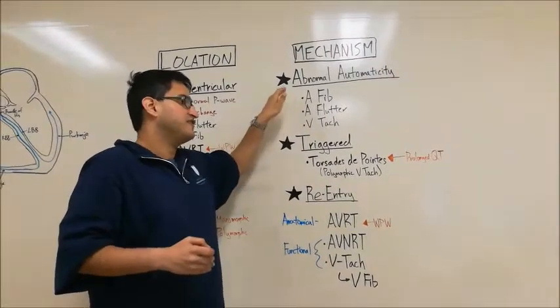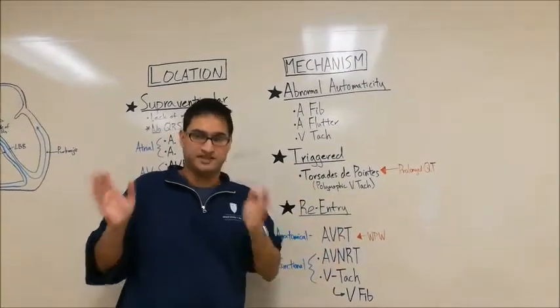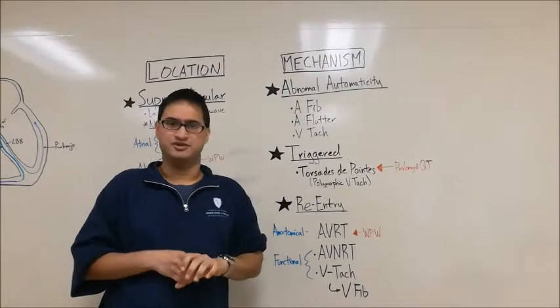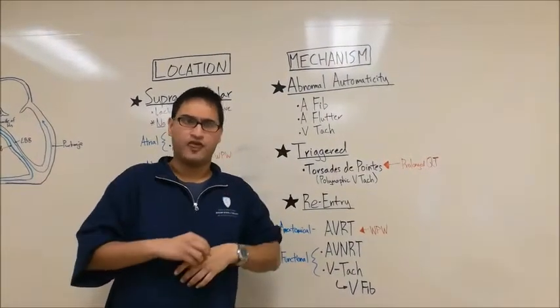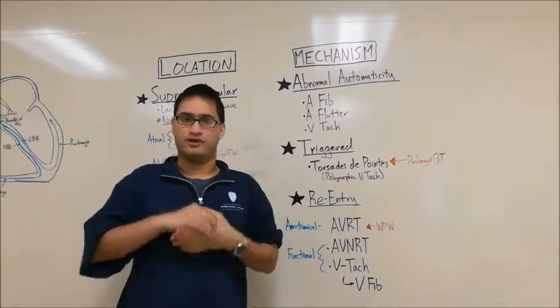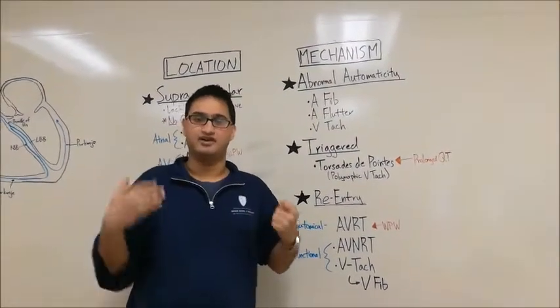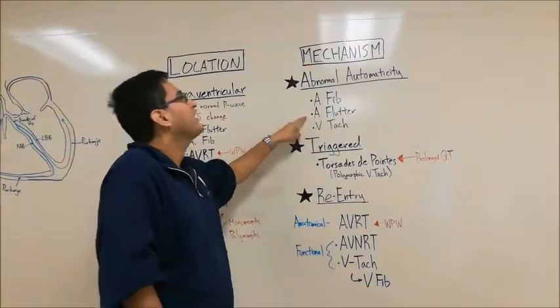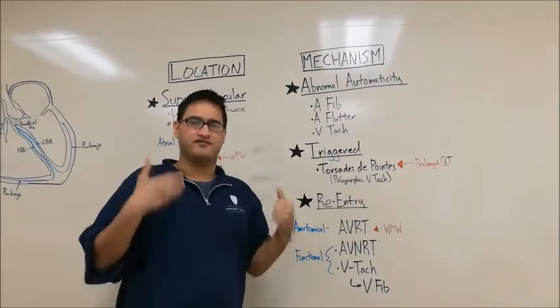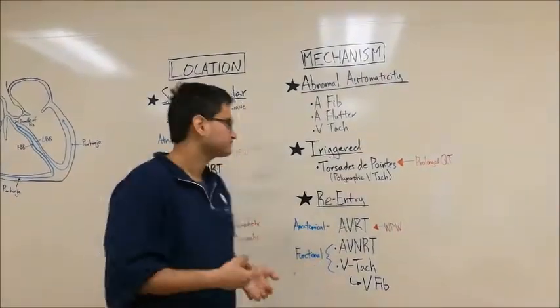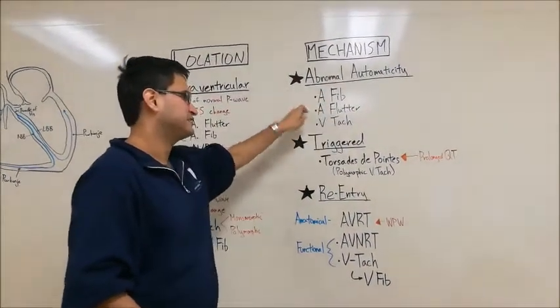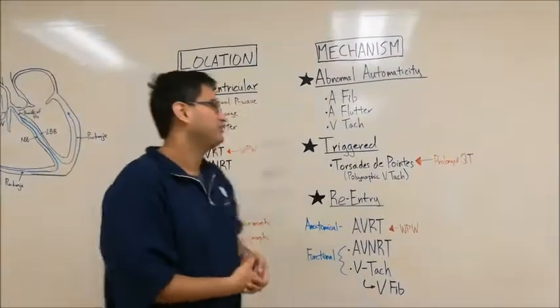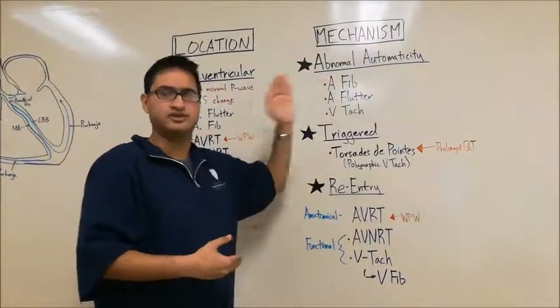For abnormal automaticity, this is all about those intrinsic rates we were talking about earlier on the table. For whatever reason, the SA node is no longer the dominant pacemaker. And that could be due to SA node damage, its rate getting lower, or it could be due to another pacemaker getting faster. For whatever reason, if something else takes over in terms of having a higher automaticity rate, that will then become the dominant pacemaker. So in atrial fibrillation or atrial flutter, the atrial myocytes are now the dominant pacemaker with a faster intrinsic rate than the SA node. In ventricular tachycardia, it's the same thing except ventricular myocytes are now the major pacemaker in generating impulses and causing contractions. So that's what abnormal automaticity is about. It's all about those rates that we were talking about earlier.